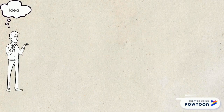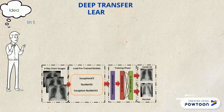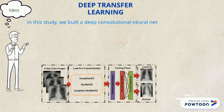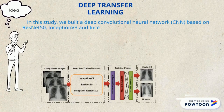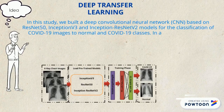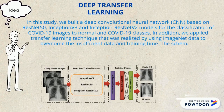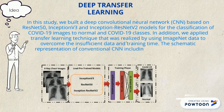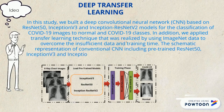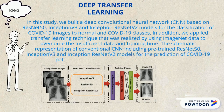Our idea: we use deep transfer learning as a solution. We have a deep convolutional neural network based on three models used for classification of normal and COVID-19 patients. In the figure below, you can see the actual working of our model.